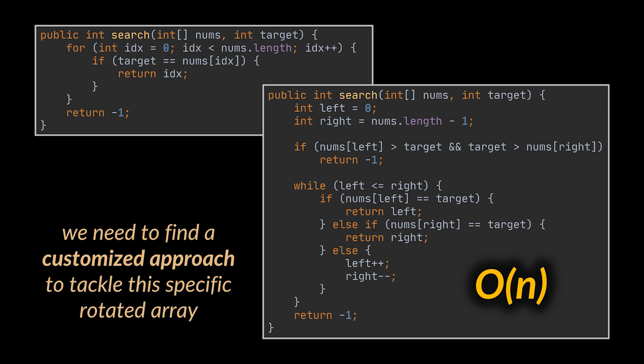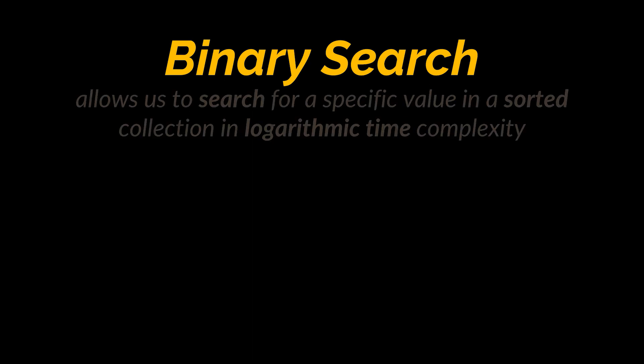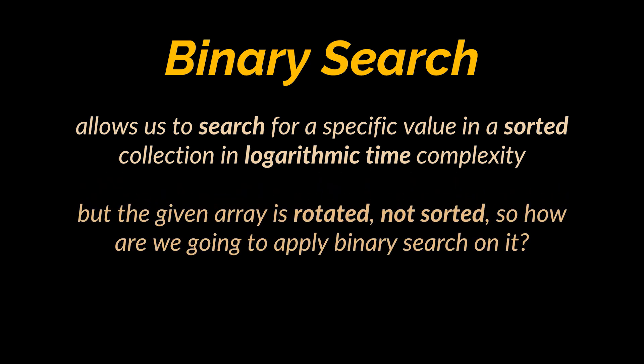So how are we going to search in that array in a manner faster than a linear approach? Well, if you've watched the previous video of this series, you may recall the one covering the binary search technique, and that is exactly what we need here. As a reminder, binary search allows us to search for a specific value in a sorted collection or array in log of n time complexity. But the catch here is that the given array is rotated, i.e. not sorted. So how are we going to apply binary search on it?